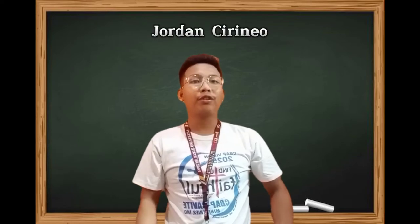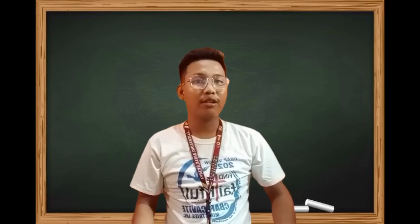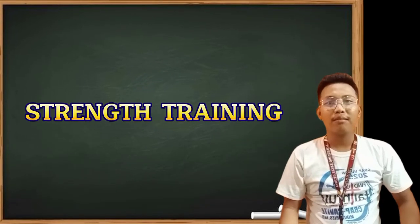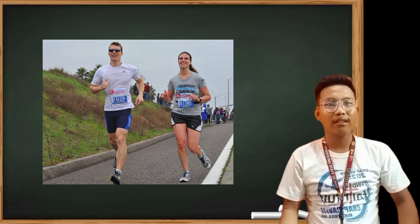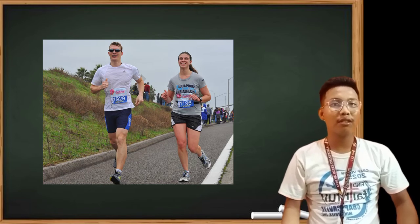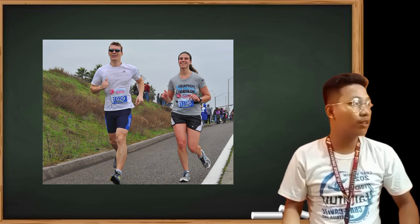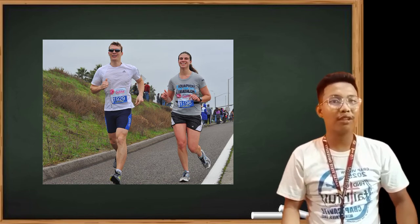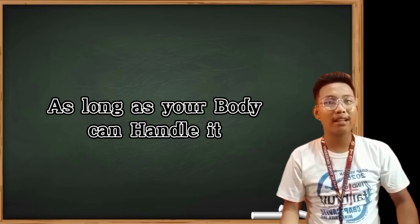Progressive Overload. Progressive overload means you gradually increase the weight, frequency, or the number of repetitions in your strength training routine. Although progressive overload is usually used in strength training, it can be applied to any type of exercise, including cardiovascular endurance exercise like running. For example, increased running distance: first week you run 10 minutes in the morning twice a week, week 2 you run 20 minutes in the morning twice a week, and week 3 you run 30 to 50 minutes twice a week. You can see the changes and progress in your exercise — as long as your body can handle it, you can keep increasing your exercise until you achieve your goal.